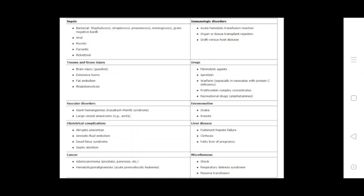Drugs: fibrinolytic agents, heparin, warfarin especially in neonates with protein C deficiency, prothrombin complex concentrates, and recreational drugs like amphetamines. Vascular disorders include giant hemangiomas, Kasabach-Merritt syndrome, large vessel aneurysms. Envenomation from snakes and insects can also cause this condition.